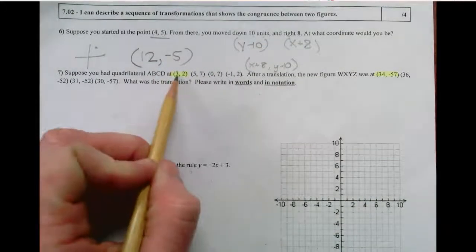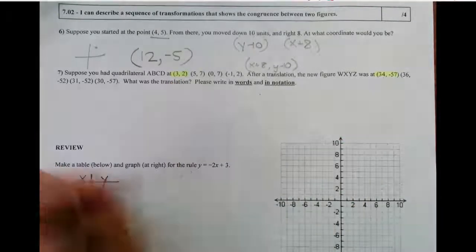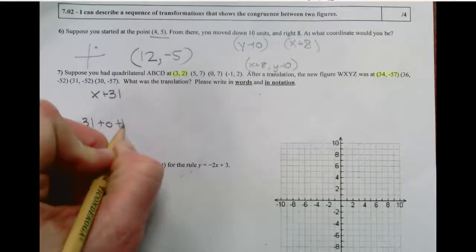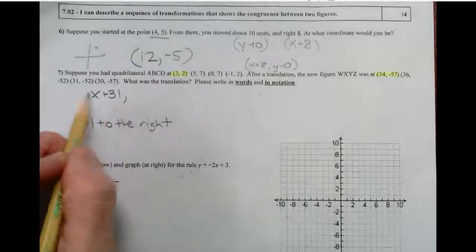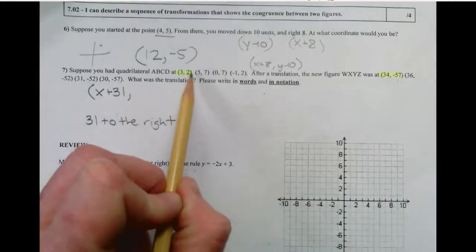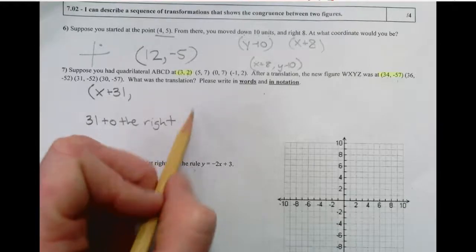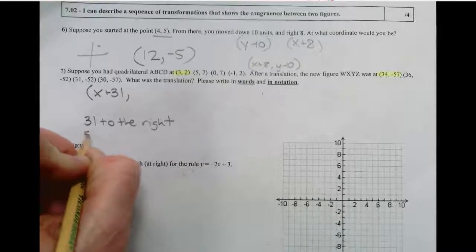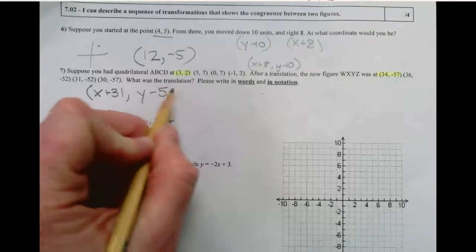So if I went from 3 to 34, I moved 31 units to the right. So that's x plus 31. And here I have 2. And I end up at negative 57. That means I went down. Well, I went down 2 to get to 0. And I went down another 57. So that's down 59. So 59 down. So that's y minus 59.